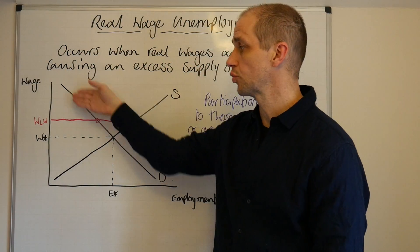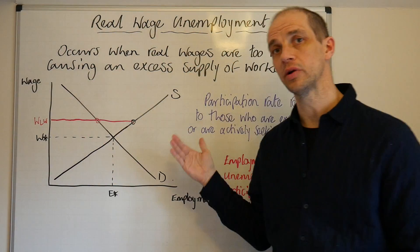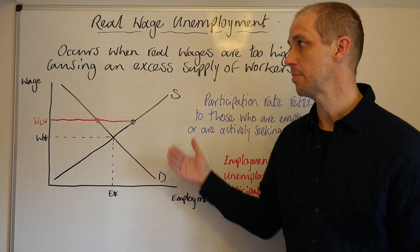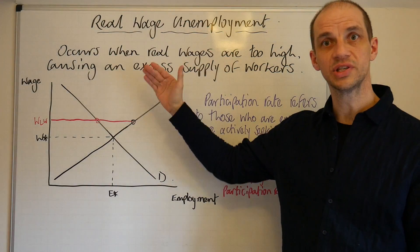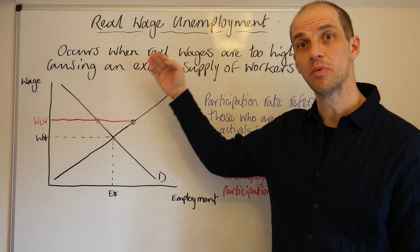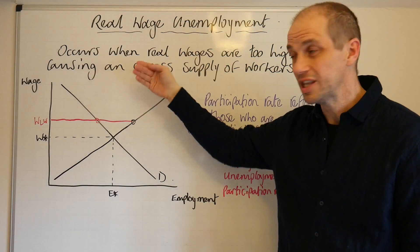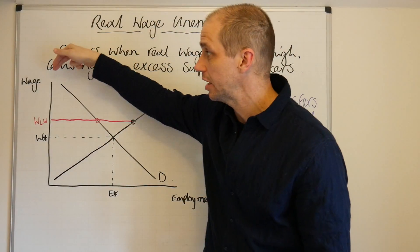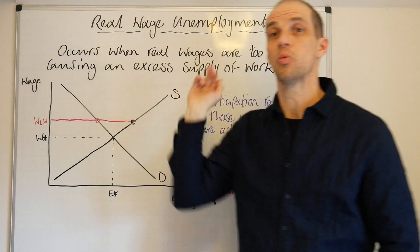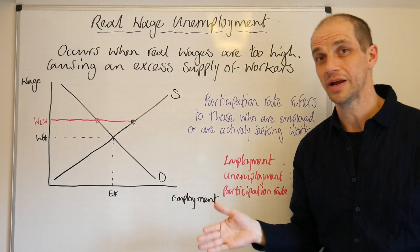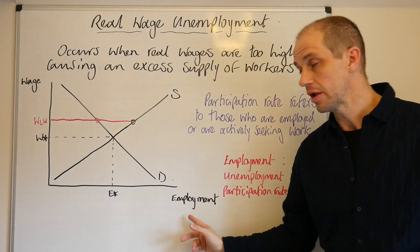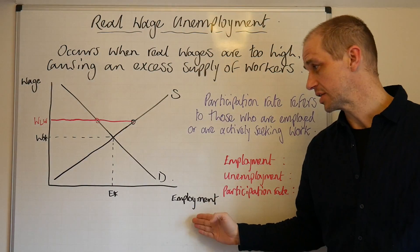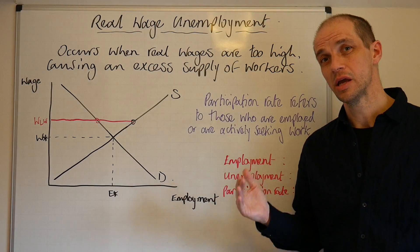I've just drawn out a very simple demand and supply diagram representing the labour market. We can tell it's representing the labour market because we've got wage on the y-axis and employment on the x-axis.